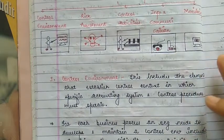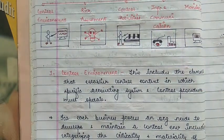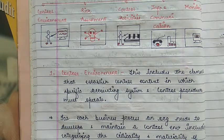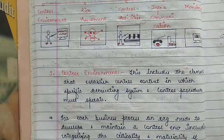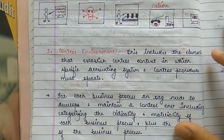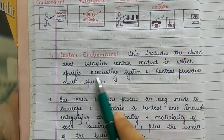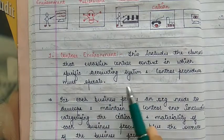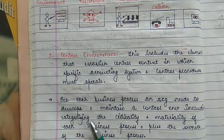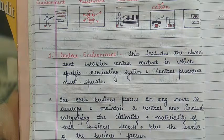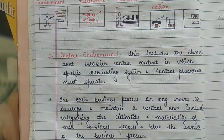Moving on to the first point, the control environment. This includes the elements that establish the control context in which specific accounting systems and control procedures must operate. For each business process, an organization needs to develop and maintain a control environment, including categorizing the criticality and materiality of each business process plus the owners of the business process.